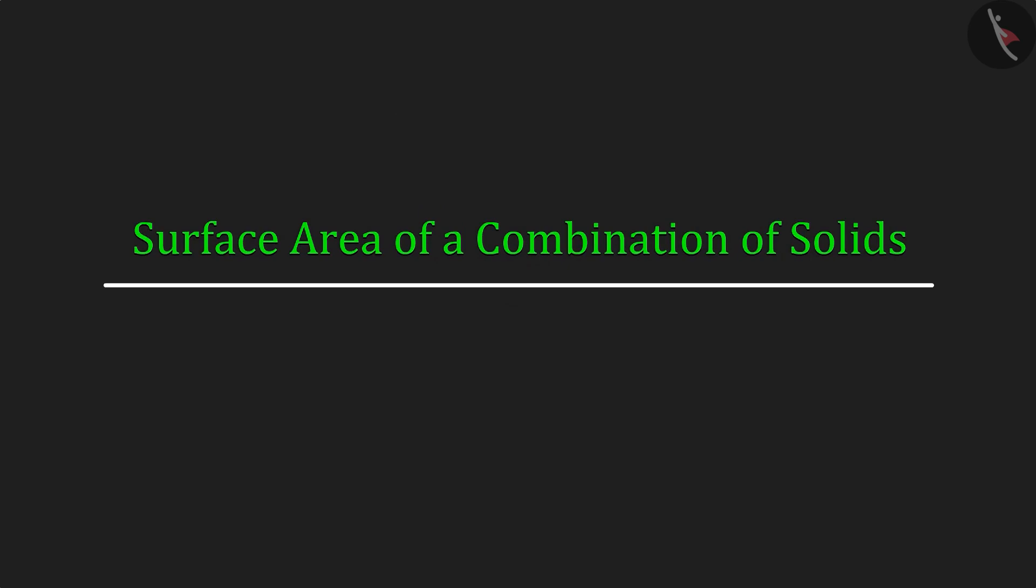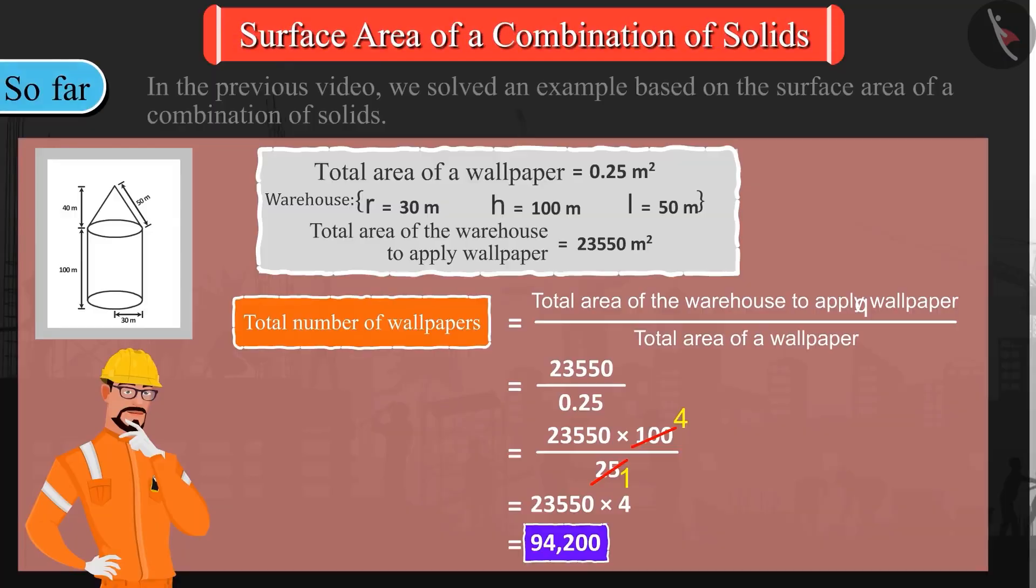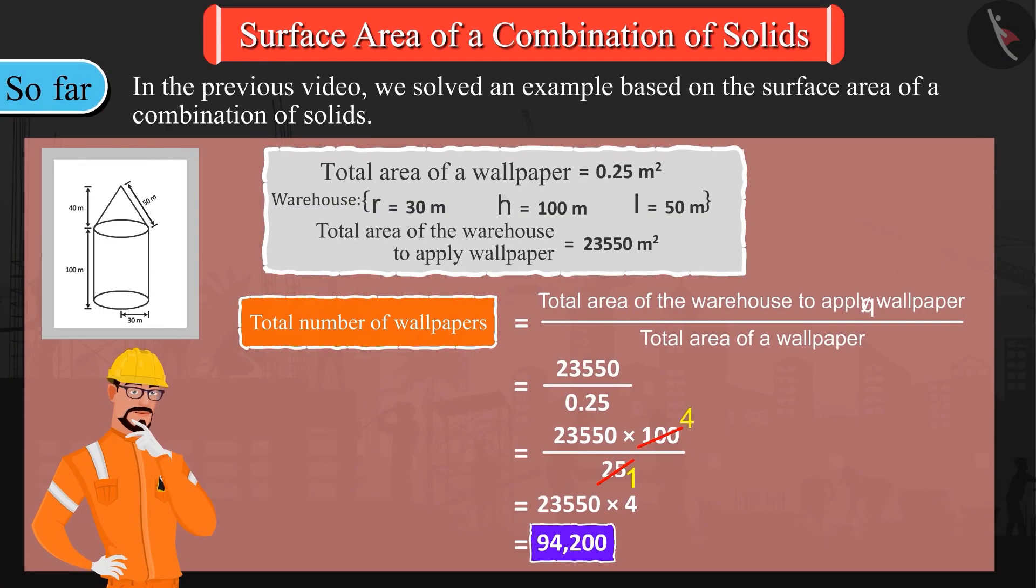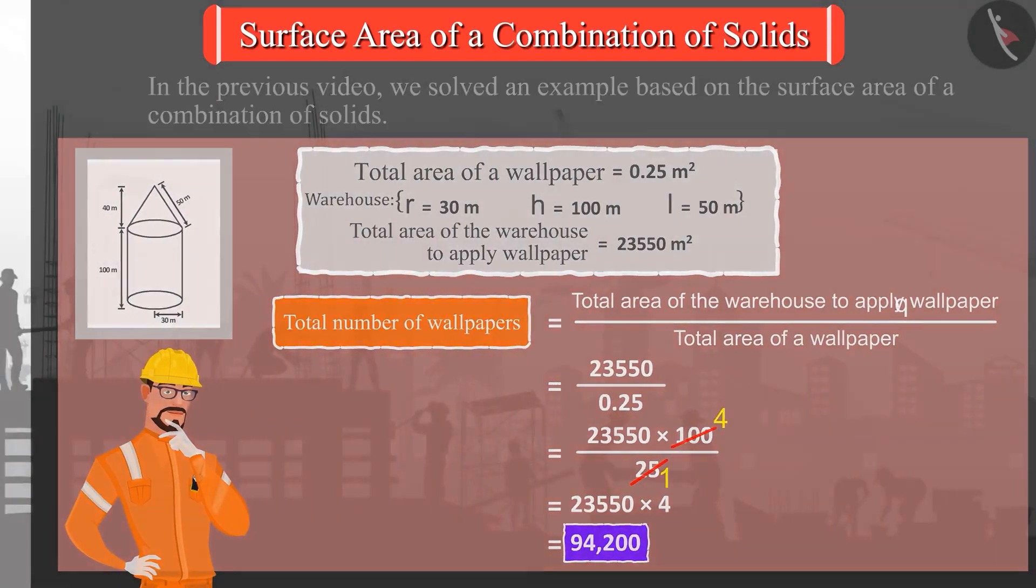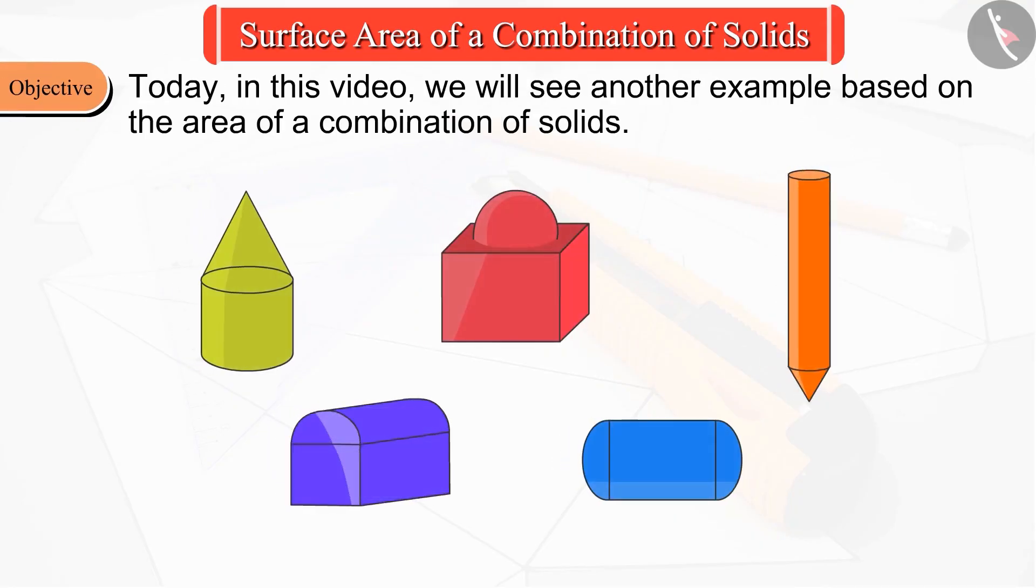Welcome to this video. In the previous video, we solved an example based on the surface area of a combination of solids. Today in this video, we will see another example based on the area of a combination of solids.